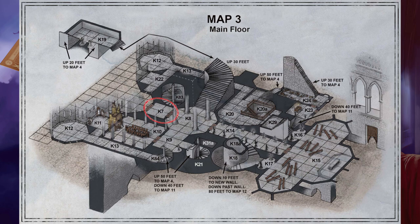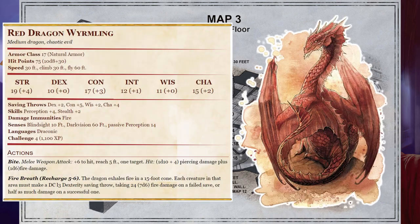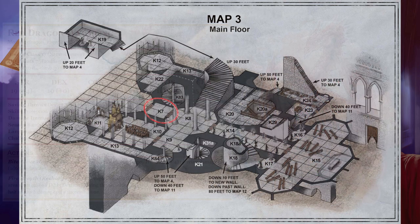The dragons are full red dragon wyrmlings with instructions to allow guests to enter the castle, but not to leave it. If intruders vacate this area, the dragons fly up to their perches and revert to stone. In their stone form, they are impervious to weapon damage. The dragons never leave the room.